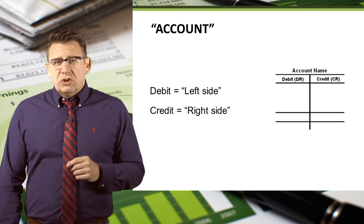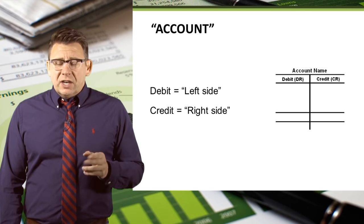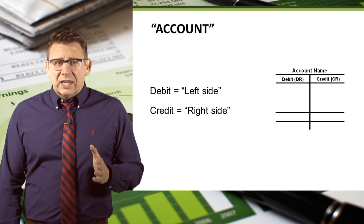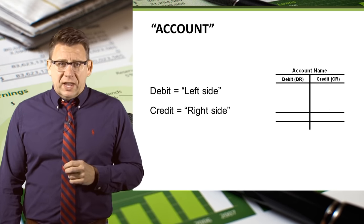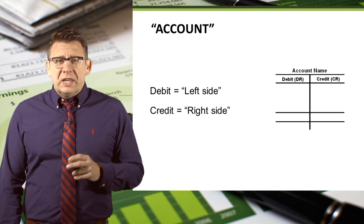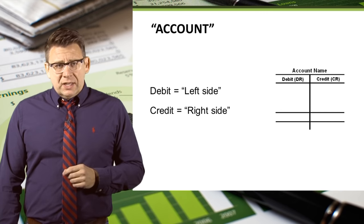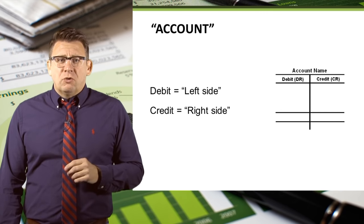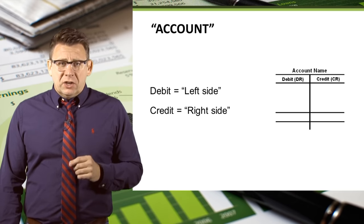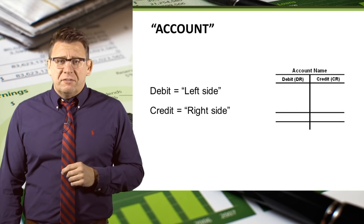Two additional terms that are very important in accounting are debit and credit. Debit, which is sometimes abbreviated DR, means left side of an account. And credit, which is sometimes abbreviated CR, means right side of an account. Debits and credits are how different accounts are increased or decreased, but they don't mean increase or decrease because it depends on which account they affect.